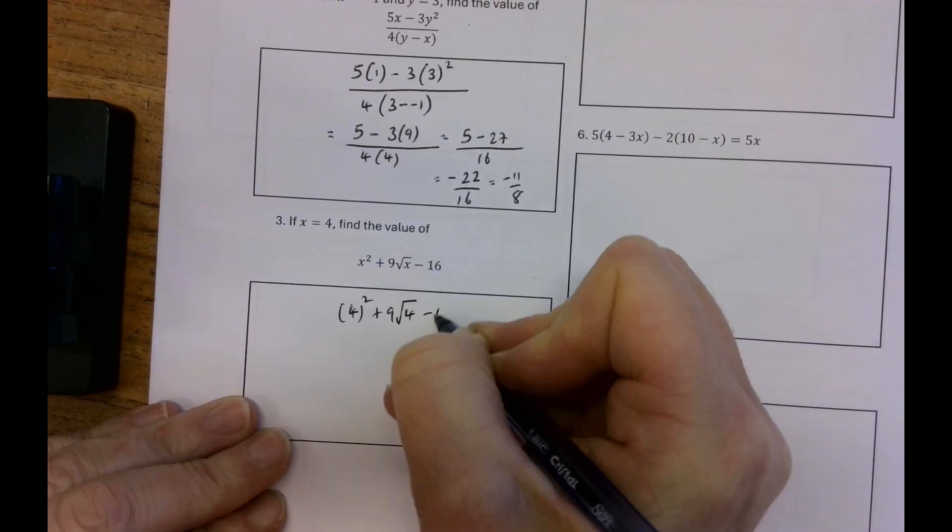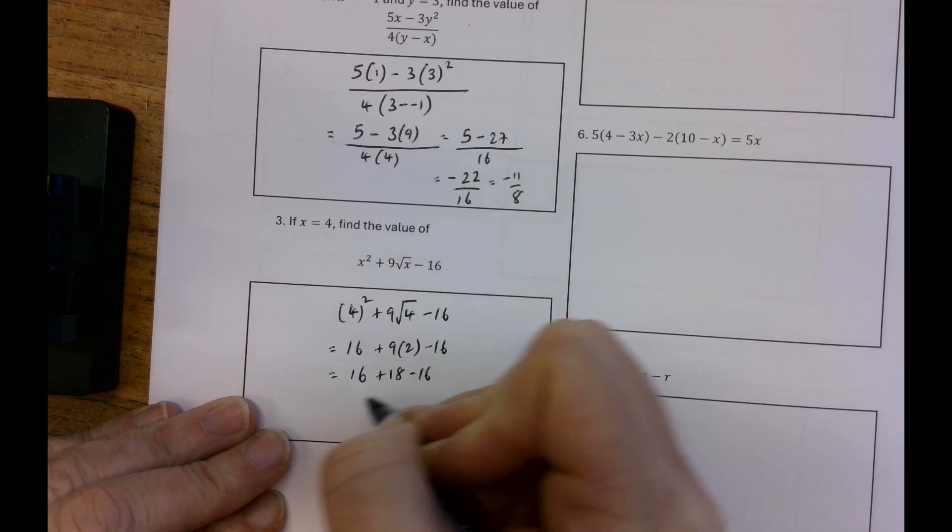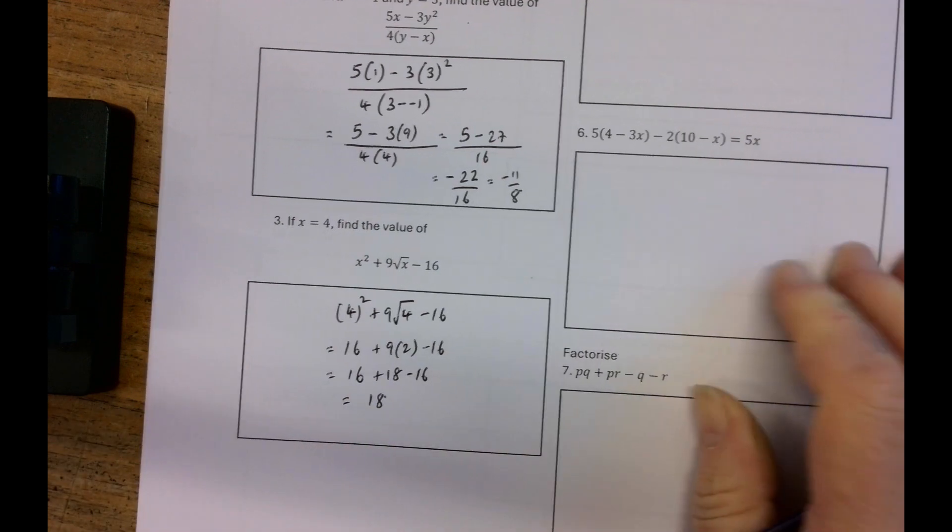If x equals 4, find the value of x squared plus 9 over 2 minus 16. So 16 plus 9 by 2 minus 16. So 16 plus 18 minus 16. So 18.